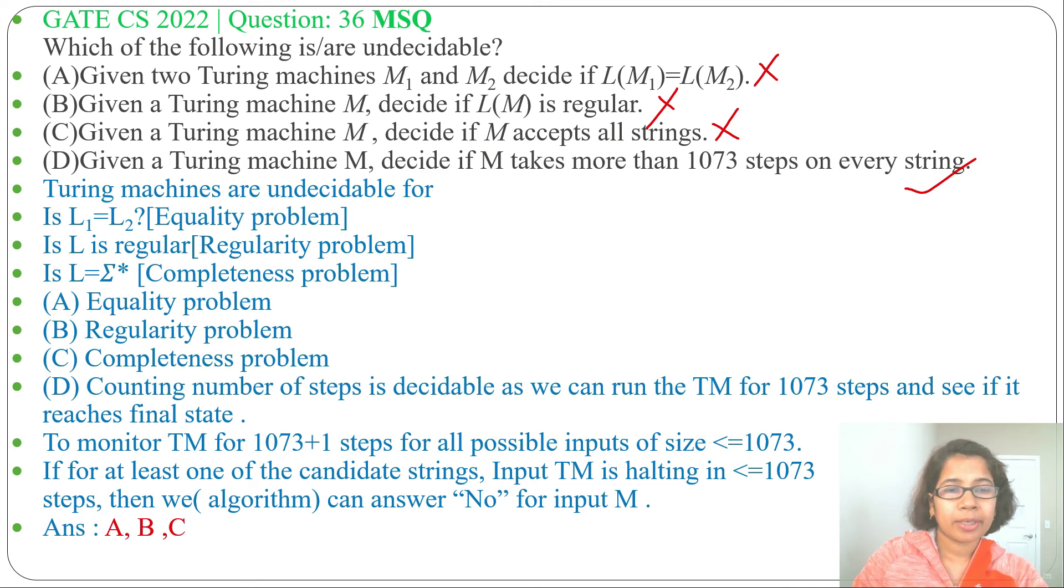Equality problem, regularity problem, and completeness problem are undecidable, while counting number of steps in Turing machine is always decidable. Just go through undecidability lecture. You can easily solve this question. If this lecture is helpful for you, please like and subscribe. Thank you.